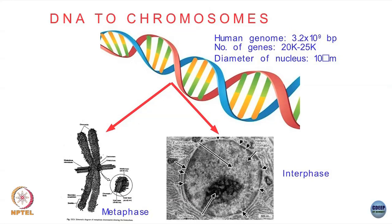I will mostly be talking about the interphase chromosome, because that is the state of the cell for most of its life cycle. The metaphase, when the cell is dividing, happens for only a small window of time. During interphase the chromosomes look like a soup — a messy soup — but is it as messy as it looks? That is what we will try to understand.